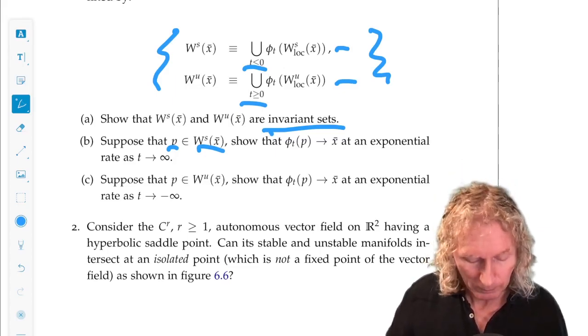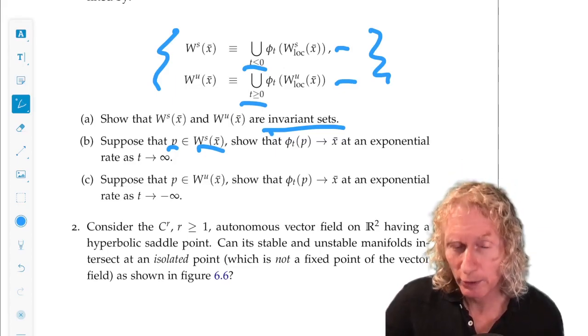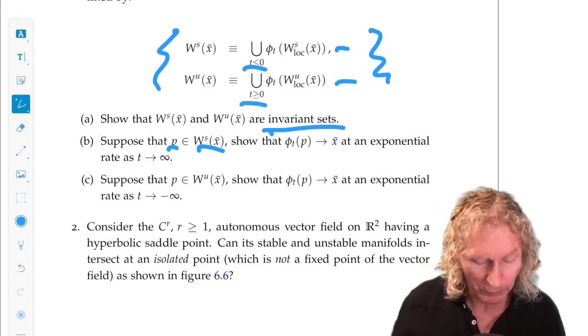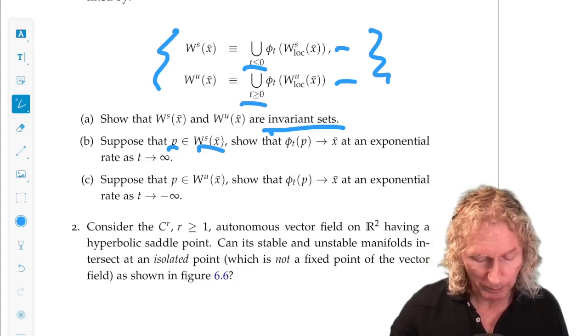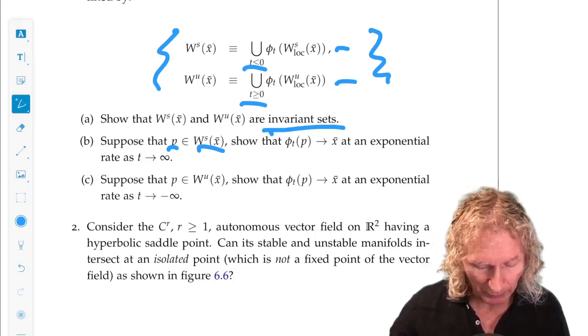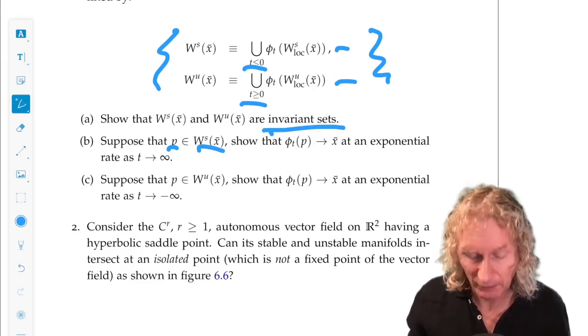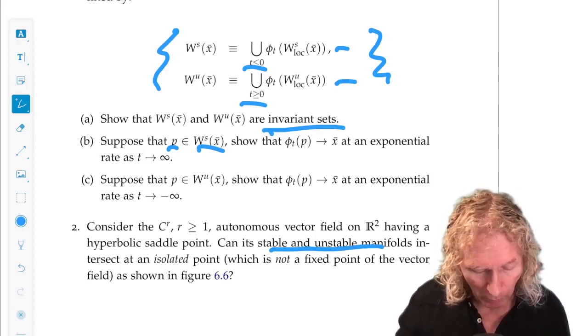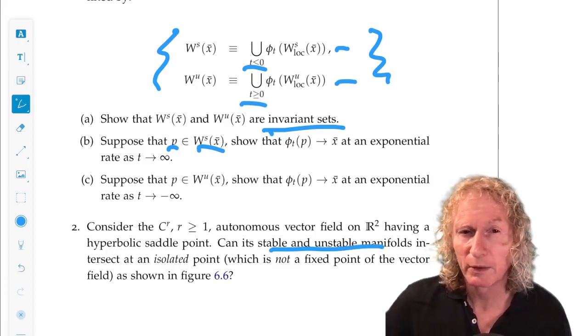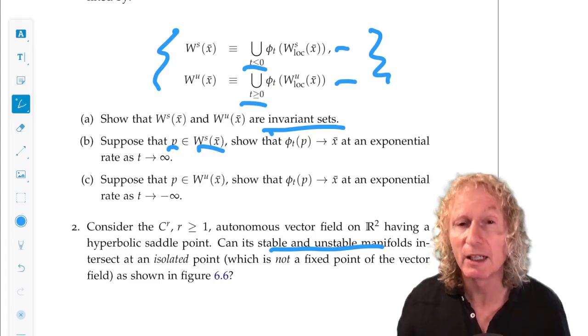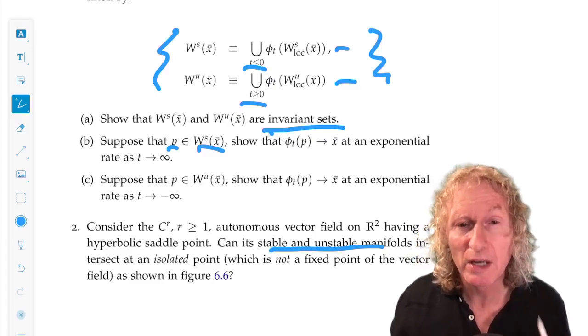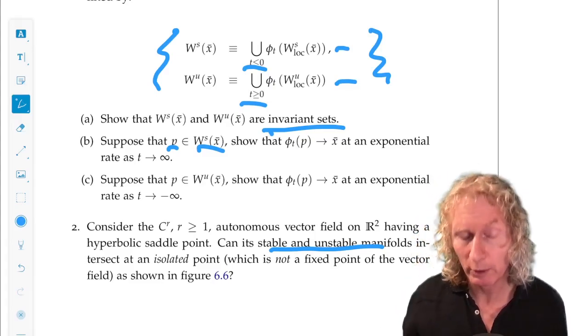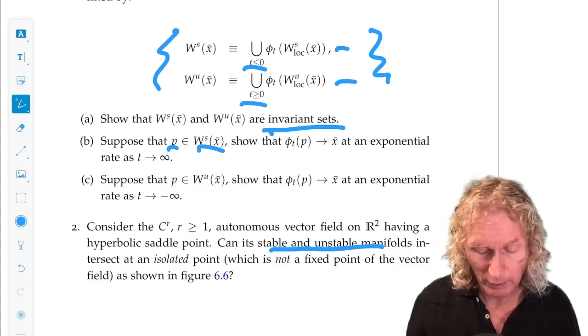Alright, number two. The same setup. It's an R^2, autonomous vector field, C^r, r greater than or equal to 1. Suppose we have a hyperbolic saddle point. We know that that has stable and unstable manifolds. Is it possible that those stable and unstable manifolds could intersect at an isolated point that's not a fixed point or equilibrium point of the vector field?